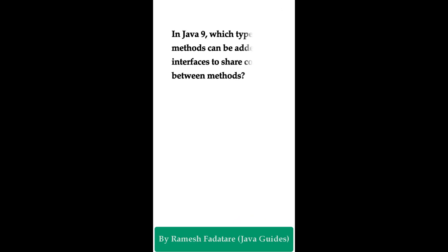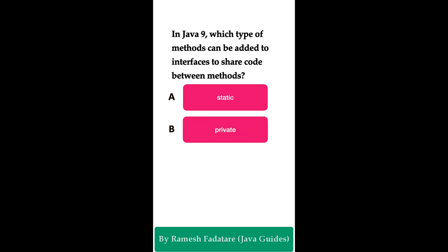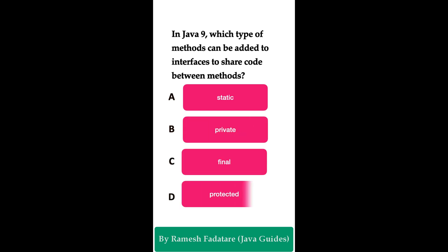Welcome to Java quiz. Here is one more question: In Java 9, which type of methods can be added to interfaces to share code between methods? Option A: static methods. Option B: private methods. Option C: final methods. Option D: protected methods. The correct answer is option B: private methods. Starting from Java 9, interfaces can have private methods, which can help in sharing code between methods without exposing them to external classes.